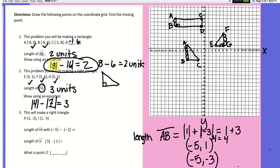So, I'm going to do it right now. I look at H. I go to 1 and negative 2, and plot that as my H. Then, I go to 1 and negative 5, and that is my I.